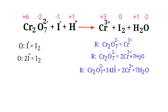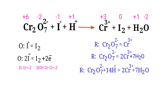For a redox reaction, the addition of charges should be equal on both sides. In the oxidation half reaction, both sides are not equal. To make them equal, you should add electrons. You can add two electrons to the right side to make it equal to minus 2. Now the charges are equaled in the oxidation half reaction.